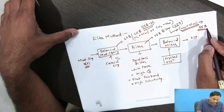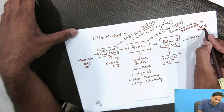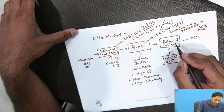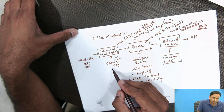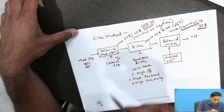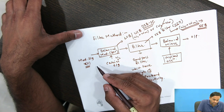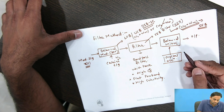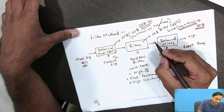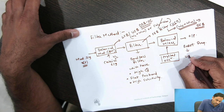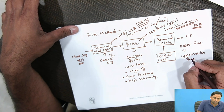Only one sideband is passed because we use a USB filter, suppressing the lower sideband. After the filter, there is a balanced mixer and crystal oscillator. The output frequency is the same as the input frequency, but we cannot transmit that frequency directly in the channel. So we have to boost that frequency — this is known as up-conversion of frequency.